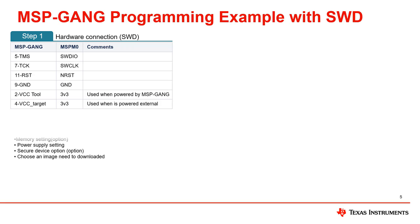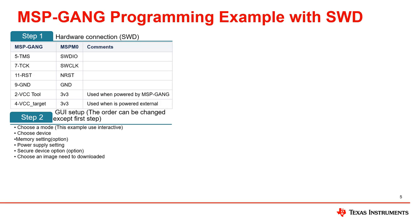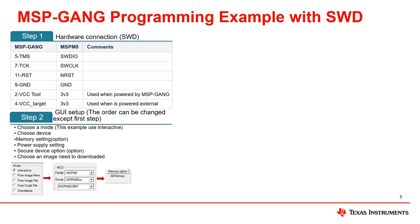The second step is to configure the MSPM0-Gang software GUI. First select the interactive mode and select the device. Then configure memory — here the configuration needs to read and write flash. Then configure the power mode. If MSP-Gang power is selected, please note that the current load is limited to 50 milliamps. This routine uses an external power supply.